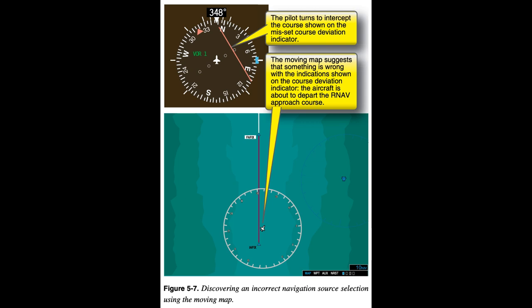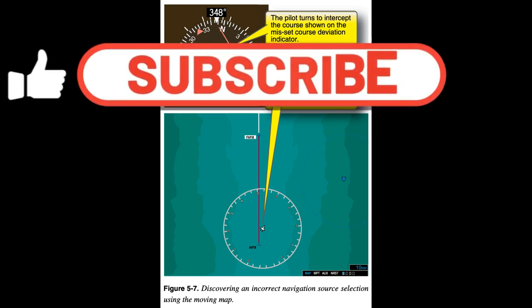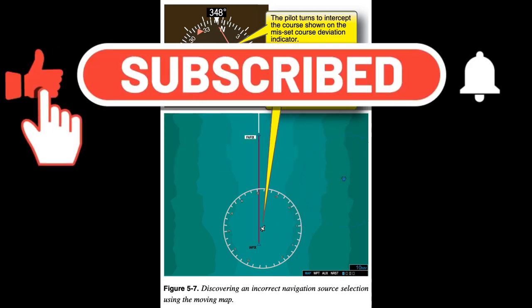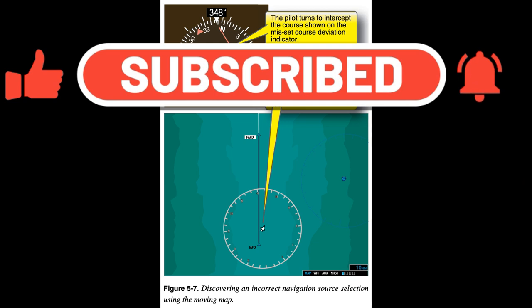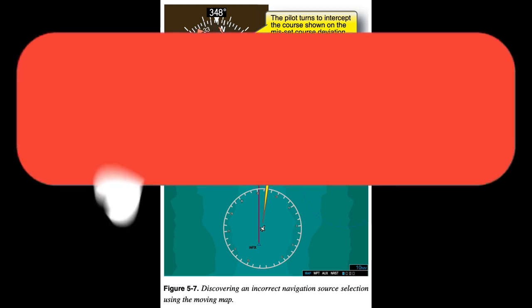The Moving Map shown in Figure 5-7 allows you to discover a more serious programming error quickly. In this situation, the pilot is attempting an RNAV approach. However, the course deviation indicator, CDI, has erroneously been set to display very high-frequency, VHF, omnidirectional range, VOR, course indications. The CDI suggests that the aircraft is well to the west of course. The Moving Map display shows the true situation — the aircraft is on the RNAV approach course, but is about to depart it.